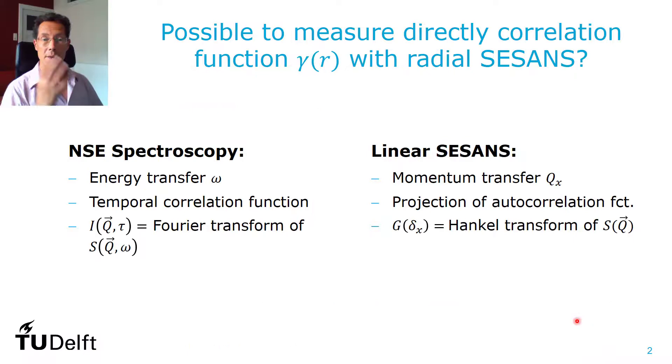We had one question. Is it possible to construct a kind of SESANS, radial SESANS, which can directly measure the correlation function?